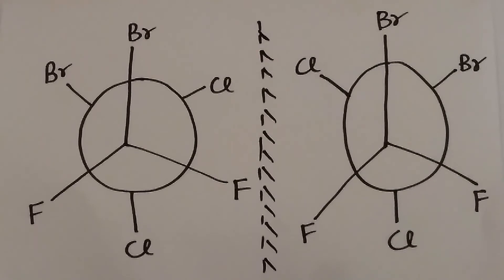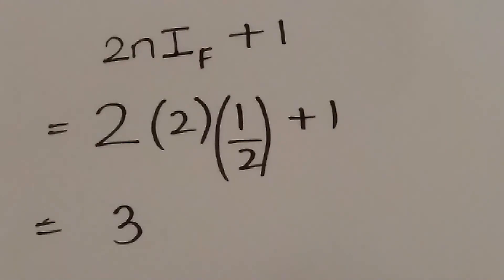Interestingly, the second and the third complex are mirror images of each other. So in this formula, the value of N will be 2, since there are two different fluorines and the spin state is half. After substituting and solving, we get the value as 3.